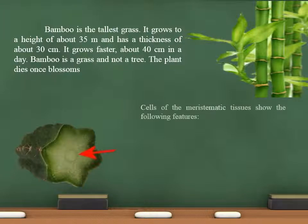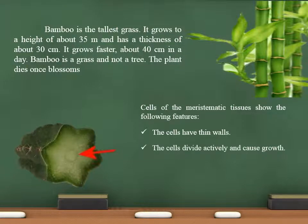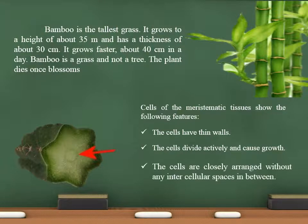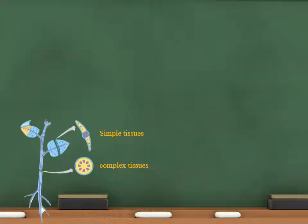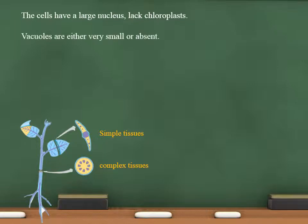Cells of meristematic tissues show the following features: the cells have thin walls; the cells divide actively and cause growth; the cells are closely arranged without any intercellular space in between; the cells have a large nucleus and organelles like chloroplasts; and vacuoles are either very small or absent.